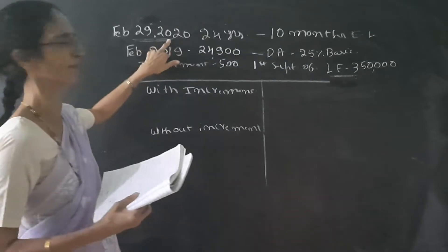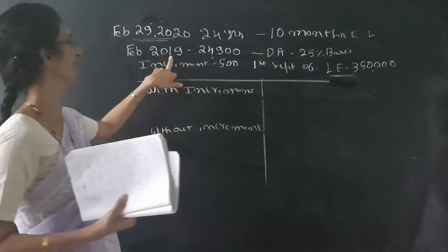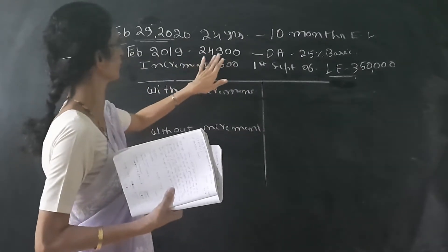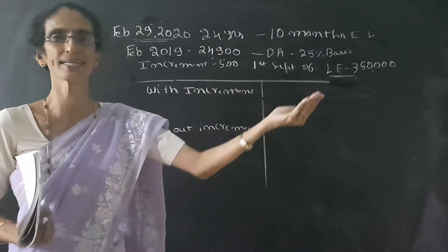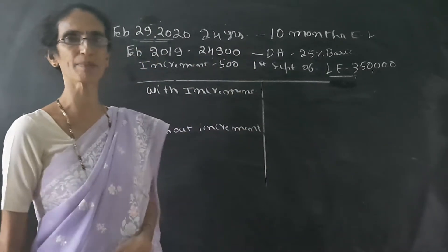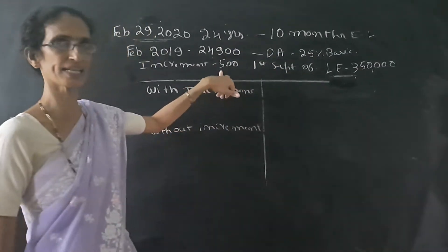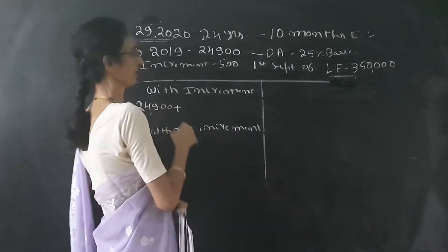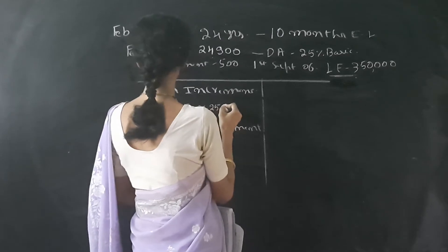With increment means: he retired in February 2020. The salary is given for February 2019 as 24,900, and the increment is due in September. So in September 2019, he gets the increment. With increment, his salary becomes 24,900 plus 500 increment, which equals 25,400.